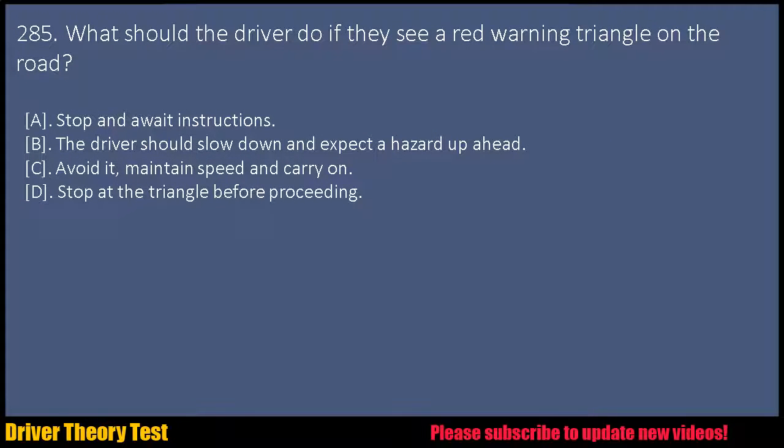Question 285: What should the driver do if they see a red warning triangle on the road? a. Stop and await instructions. b. The driver should slow down and expect a hazard up ahead. c. Avoid it, maintain speed and carry on. d. Stop at the triangle before proceeding.